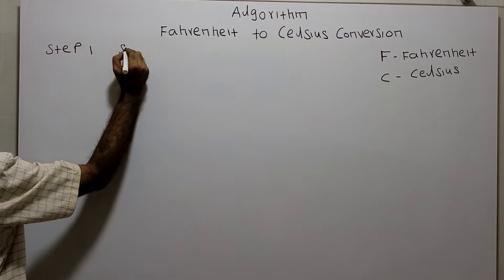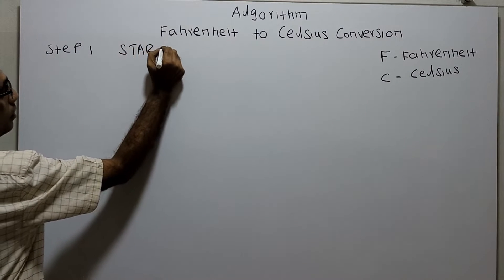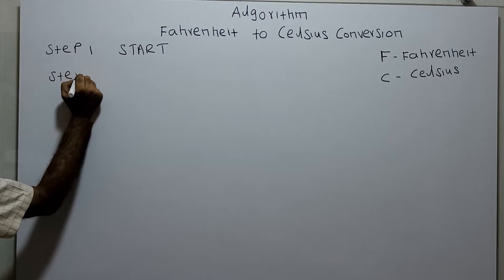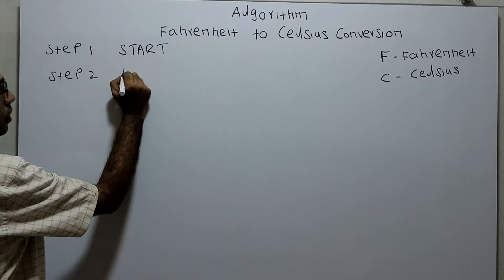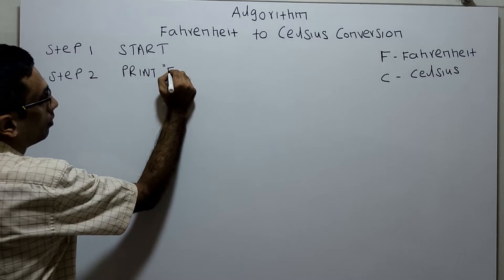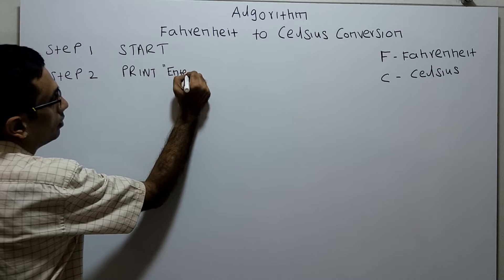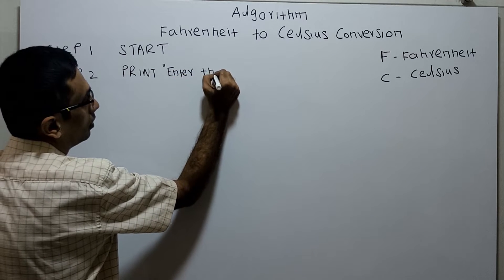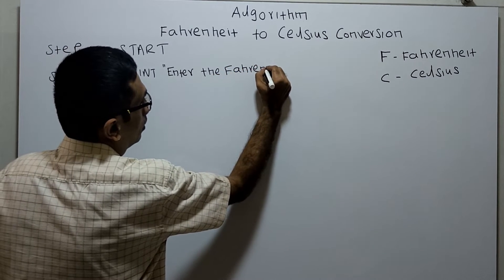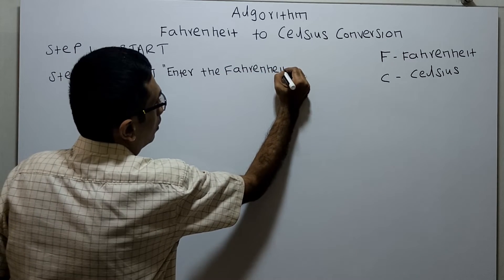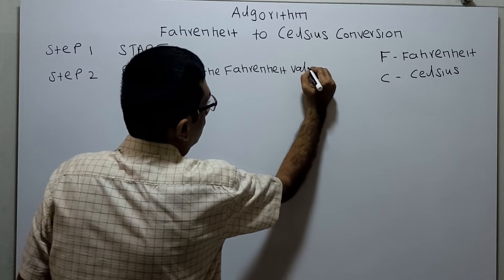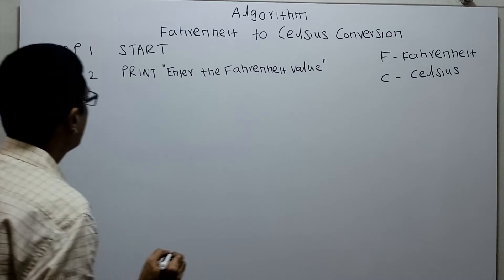Step one is the logical start of the algorithm. Step two, I will use a print statement: 'Enter the Fahrenheit value.' Step three, input F.